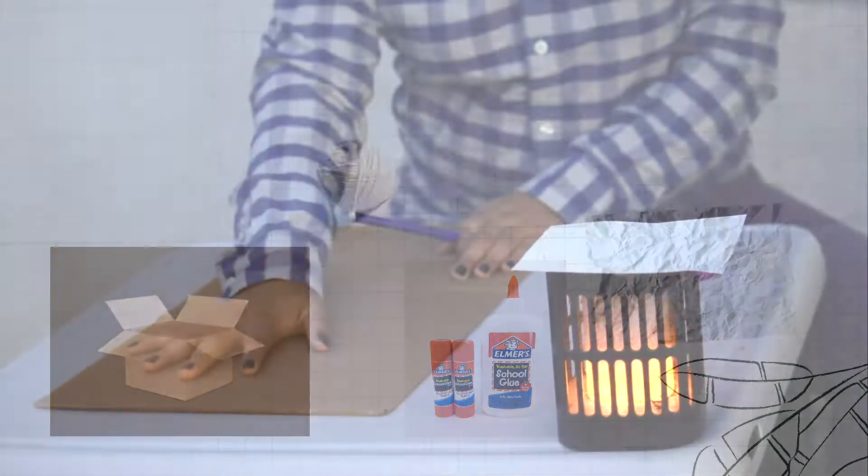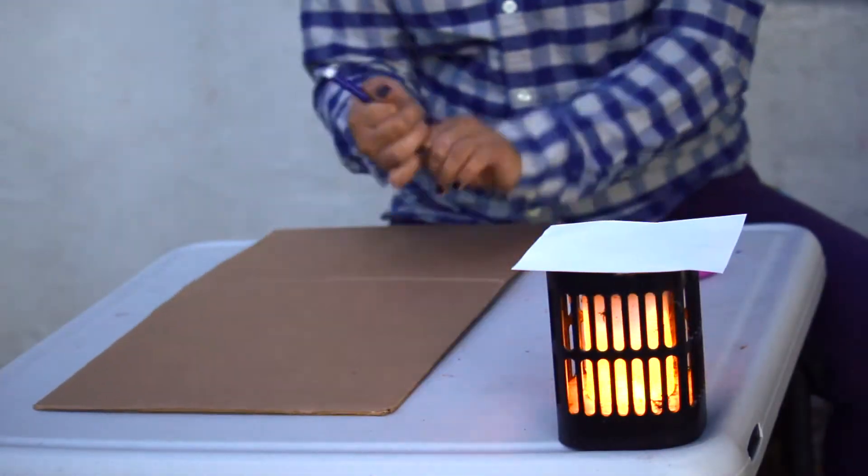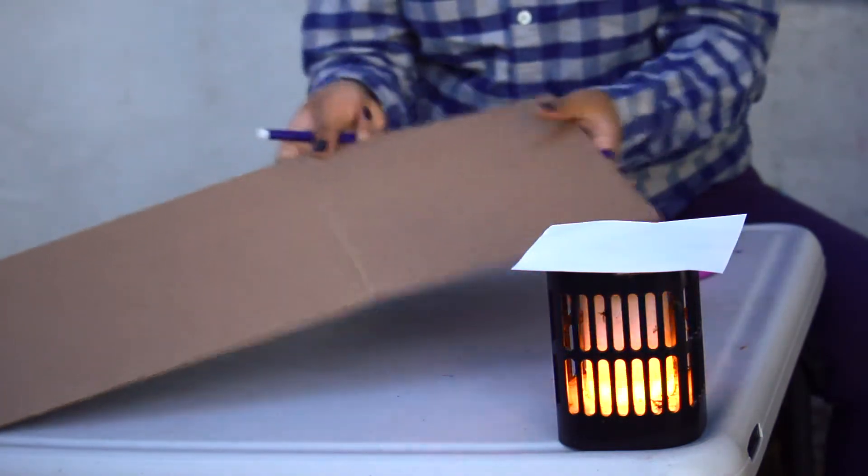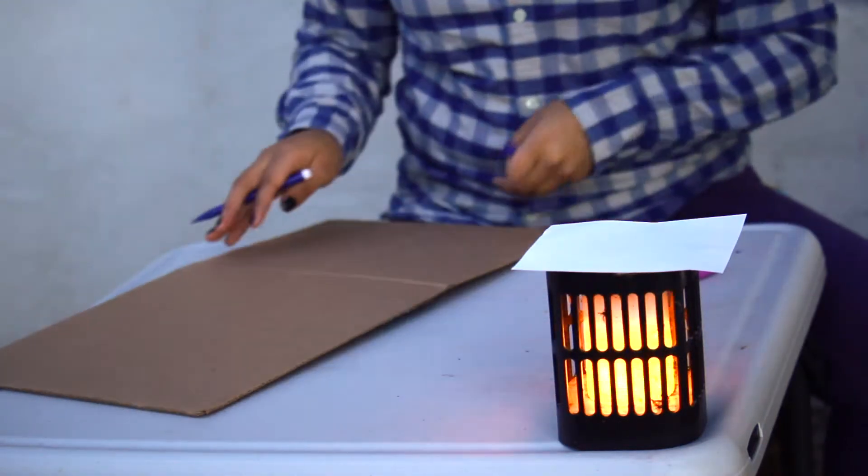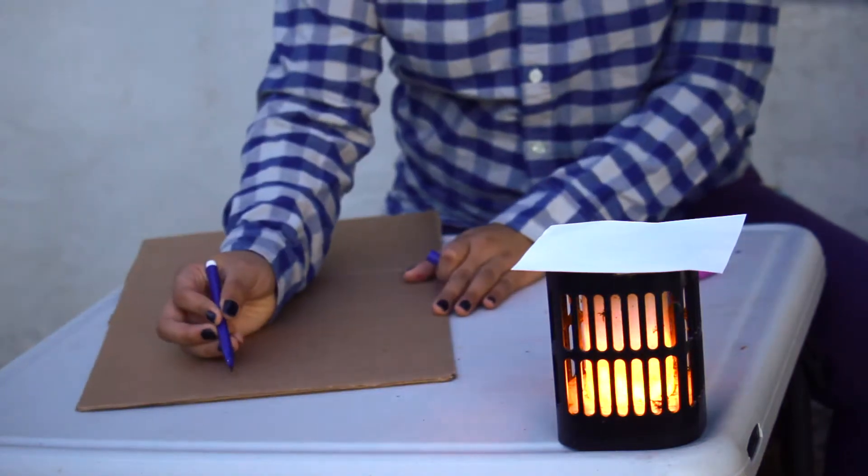All right everyone, so we're first going to be working with our cardboard. And for this part you're going to need a pencil, a marker, or a pen. This piece of cardboard that I'm going to be using is actually a piece from an Amazon box, and what we're going to be doing is drawing a circle on it.